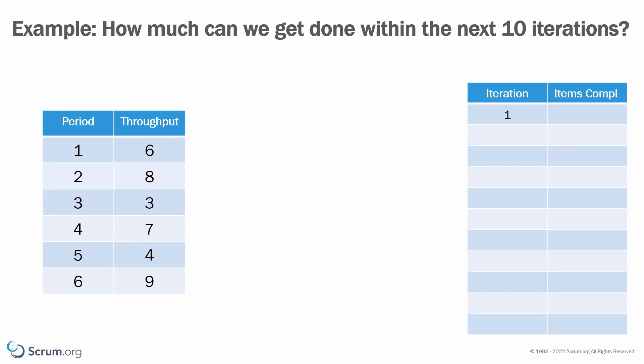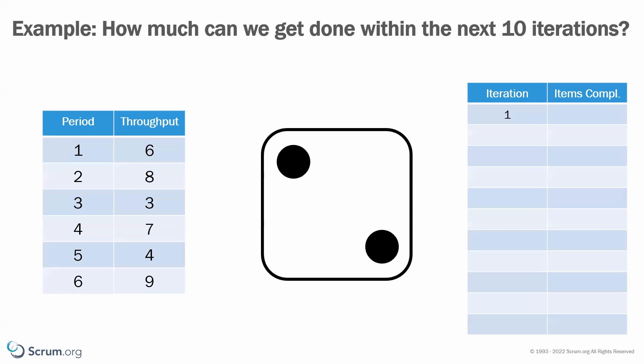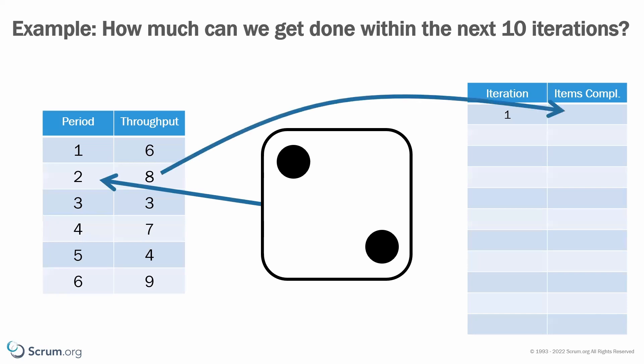On the right side, we refer to these as iterations, and those iterations are looking into the future. They have to be exactly the same time frames as the periods in our historic data. We are now choosing one of those historical data sets randomly — we simulate this by rolling a dice. It shows two, so we go to period number two and use the throughput for this period and put it into our result list on the right side.